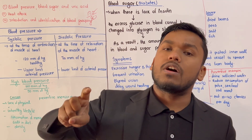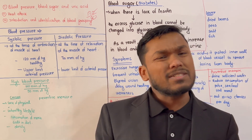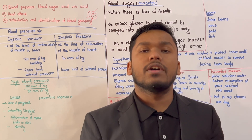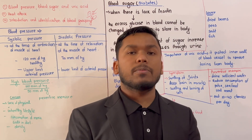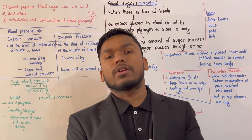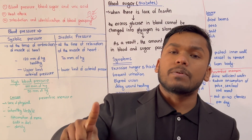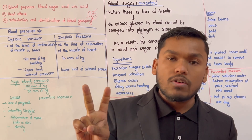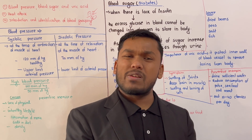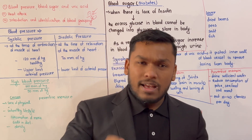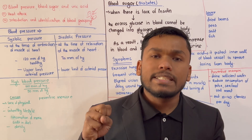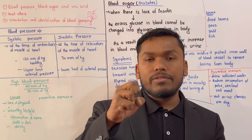The two types are systolic pressure and diastolic pressure. Why is it systolic? When the heart contracts, that is called systolic pressure. What is the diastolic pressure? That is the pressure when the heart is relaxed.